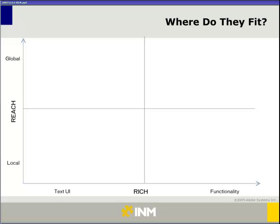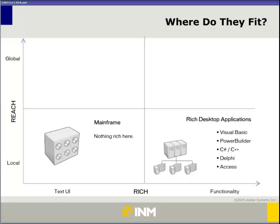Looking at where they fit into the ecosystem, it's good to take a look at where computing began and how we got to where we are today. When applications first started to develop, they were really mainframe solutions — text-based interactions available to a small group of users in a local community. Then desktop PCs started to become more popular and applications took on a new form. The pendulum swung to desktop applications — productivity apps like Word and Excel, and entertainment applications — all designed for a client-server or client-client environment.